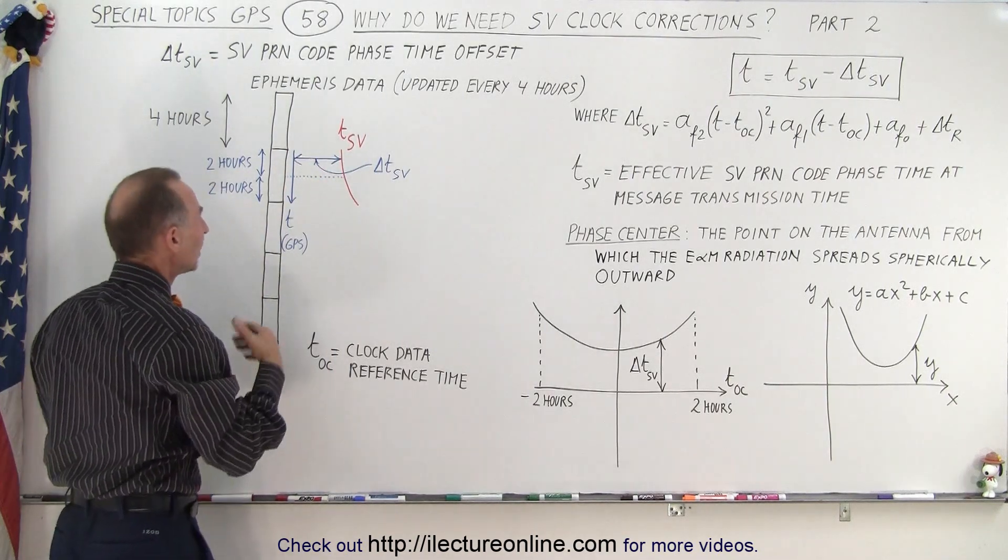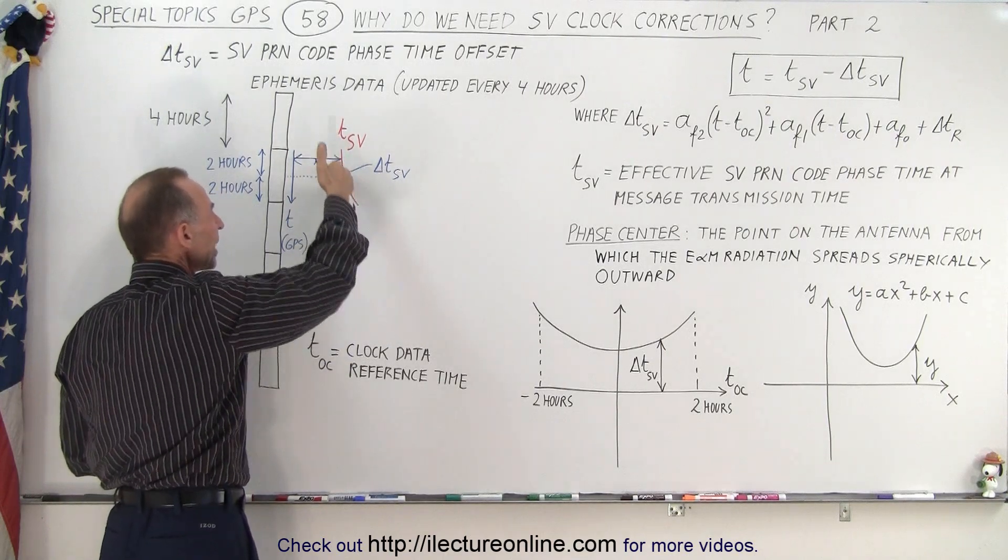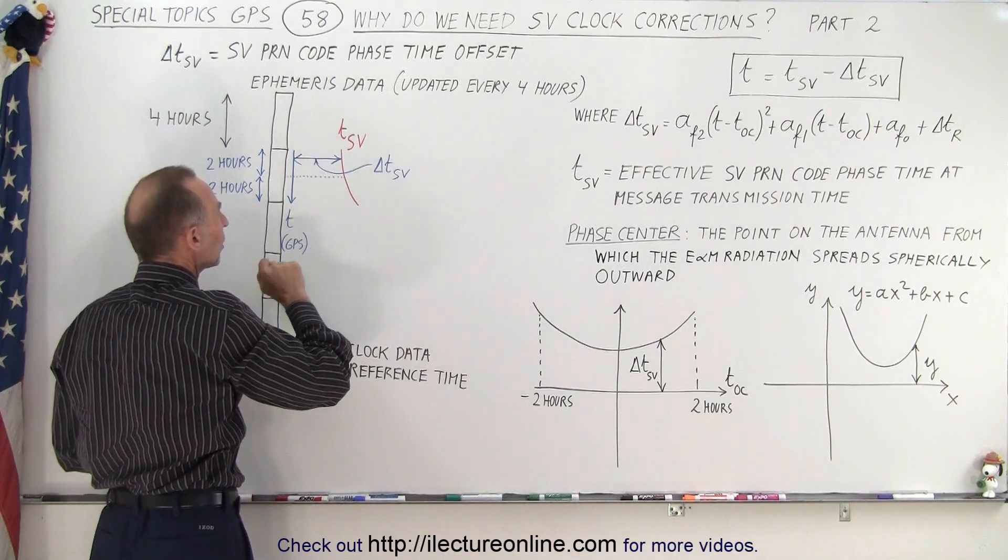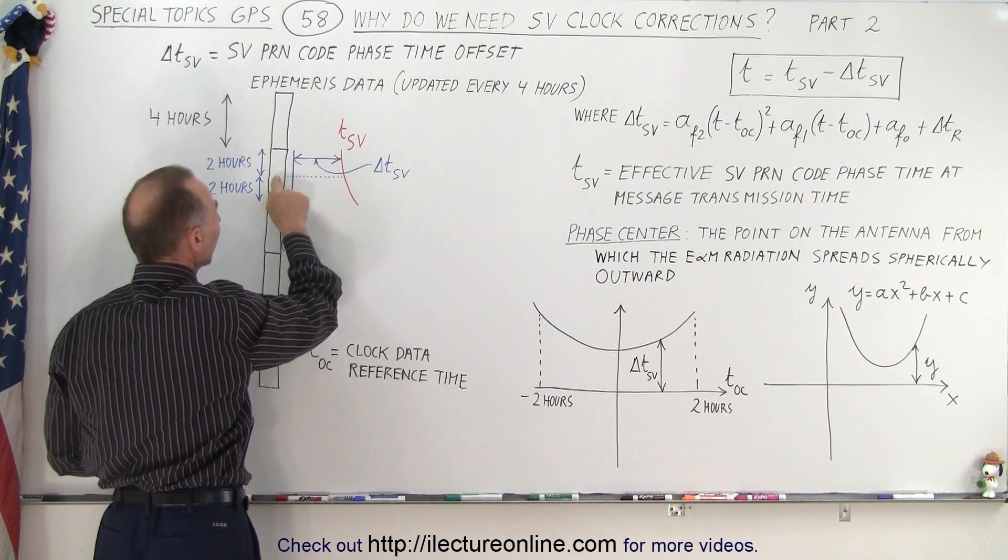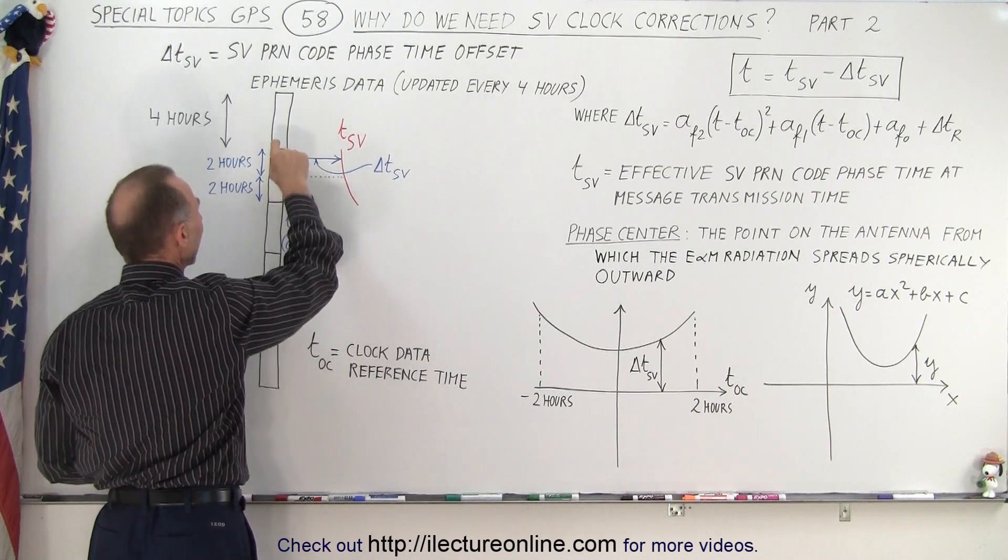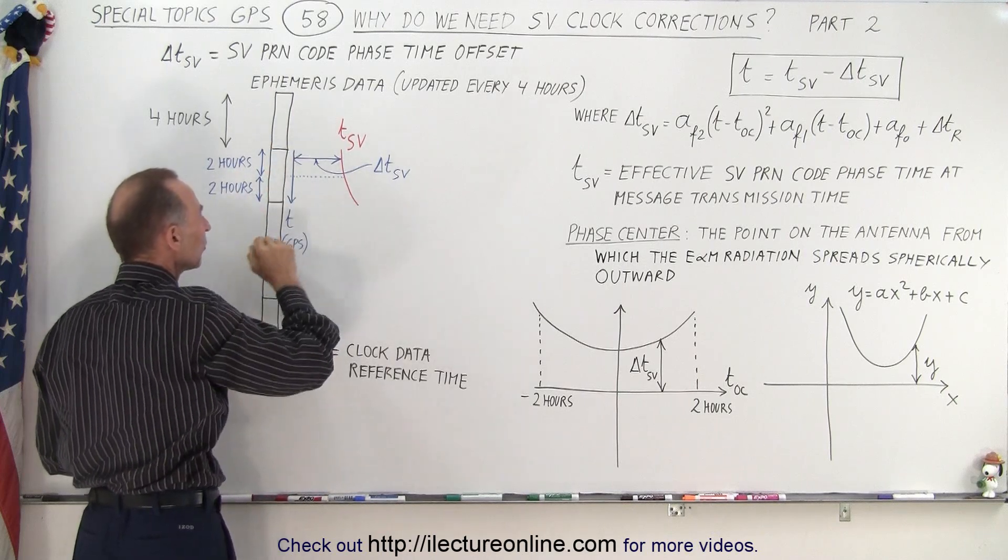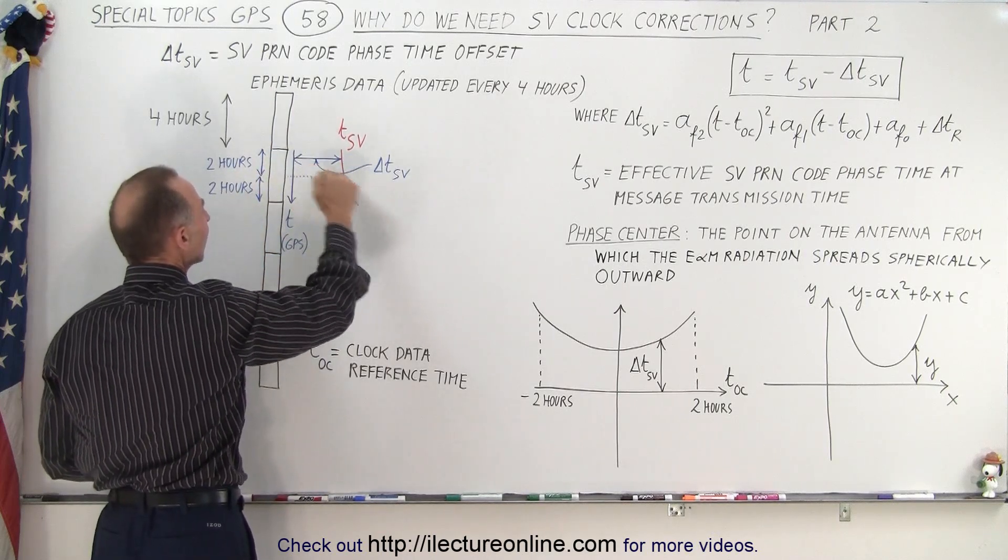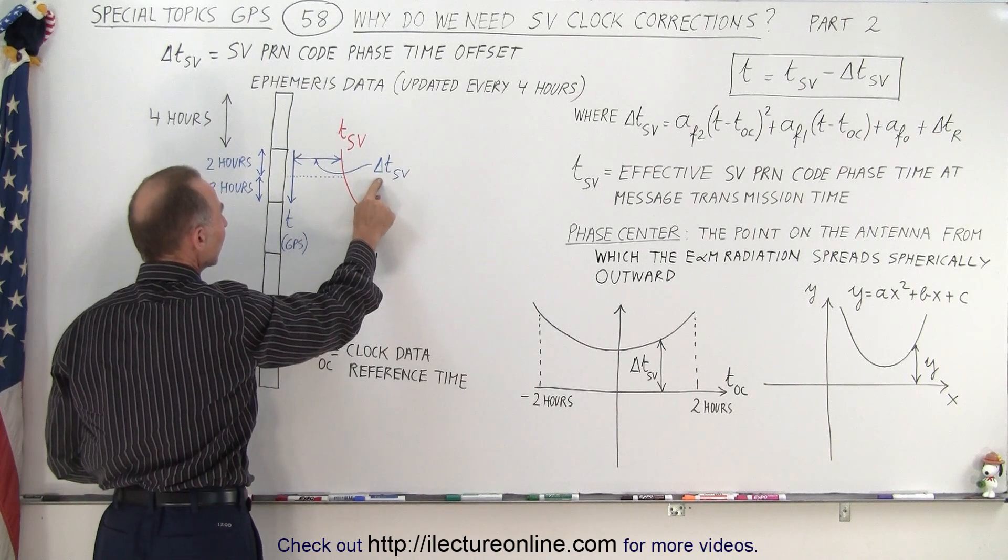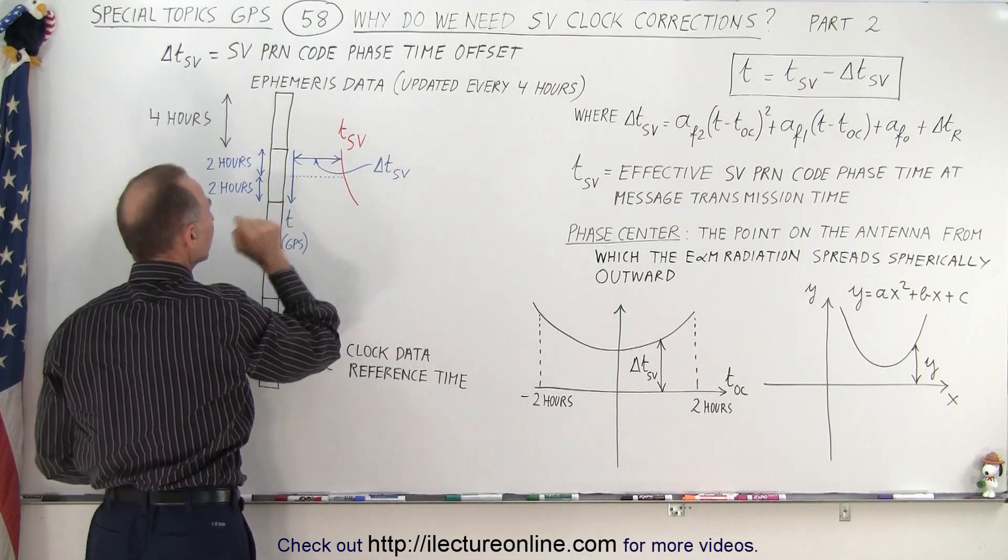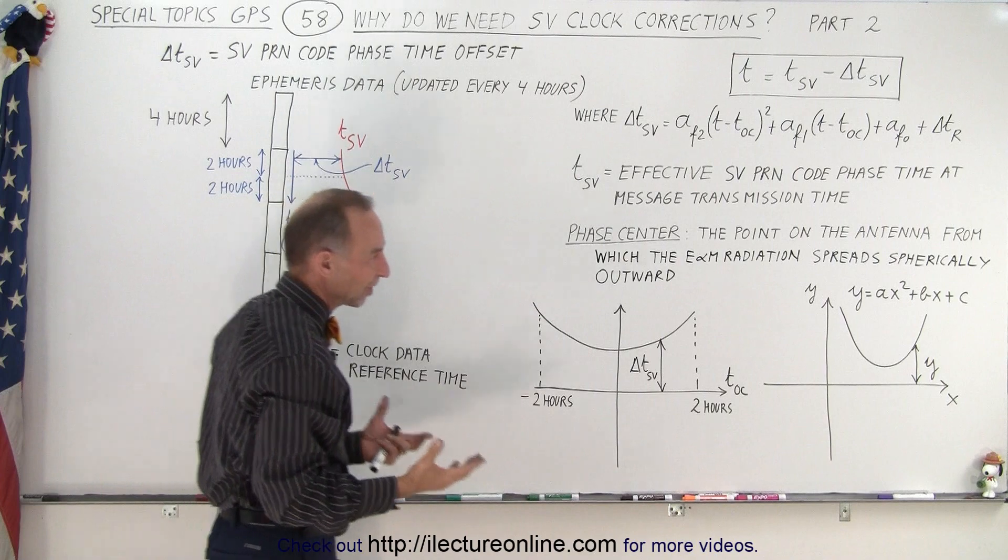So what happens is we then approximate this slope here by a quadratic equation, and then we find an exact center point at the halfway point in that four-hour segment. We have an exact lineup of the difference between the SV time and the GPS time.